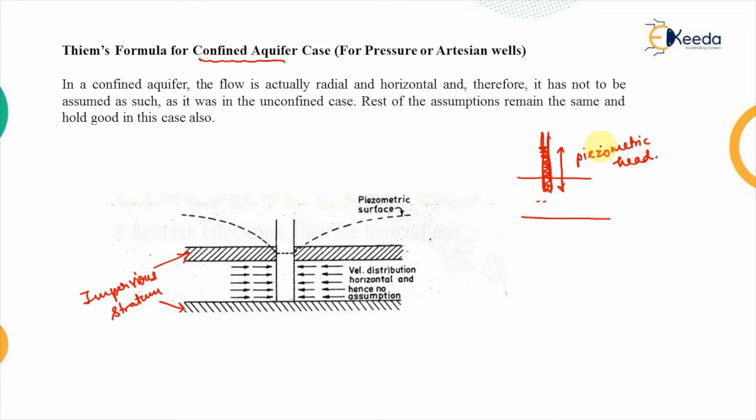So, if we are pumping out the water from the confined aquifer with the help of the wells, then obviously the water level should fall here. But because of the two impervious strata, the water will be flowing under the pressure and the speed with which it will be flowing in this case that will be higher because the water is always under the constant pressure in case of the confined aquifers.